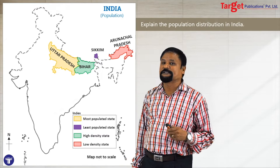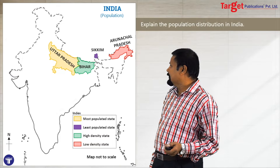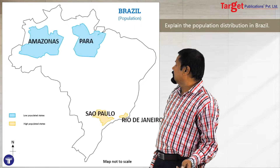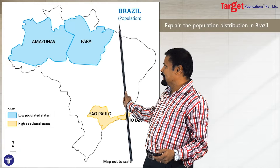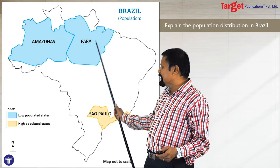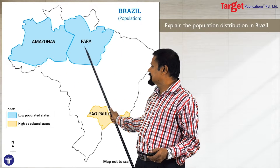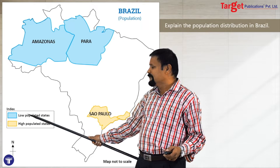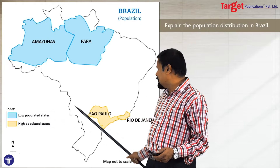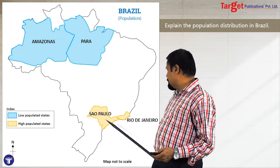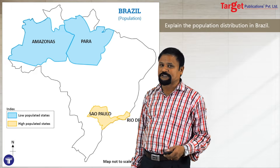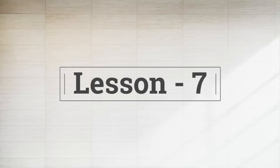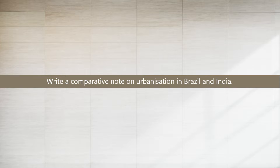The same way you can answer the question about Brazil's population. Here you can show Amazon and Pará, which are low populated states, and also show São Paulo and Rio de Janeiro where the population is more. Now lesson number seven is about urbanization.